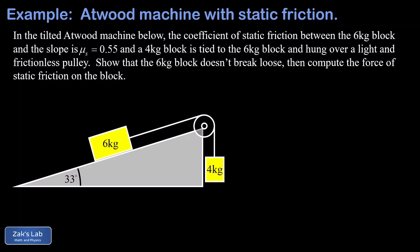In this video, we're looking at a tilted Atwood machine with a six kilogram block lying on the surface of the incline that's tied to a four kilogram block by a string that's hanging over a light and frictionless pulley. And we're given a coefficient of static friction this time because we're told this six kilogram block is actually not going to break loose.